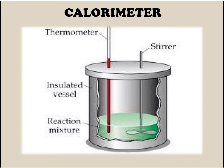The next instrument is called a calorimeter. A calorimeter is used to measure the heat content of an object. Using this equipment, we can measure the heat produced or absorbed in a physical or chemical process. A calorimeter looks very similar to a thermos flask. It is made up of two vessels; the inner vessel is usually made up of copper. It contains a thermometer for measuring temperature and a stirrer for stirring the liquid inside the calorimeter.